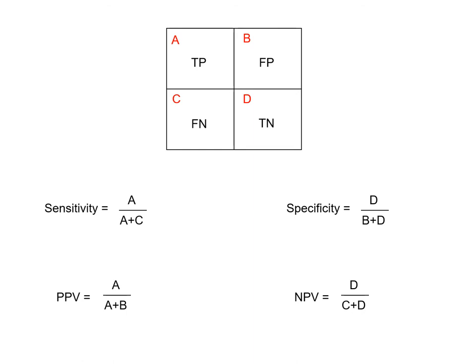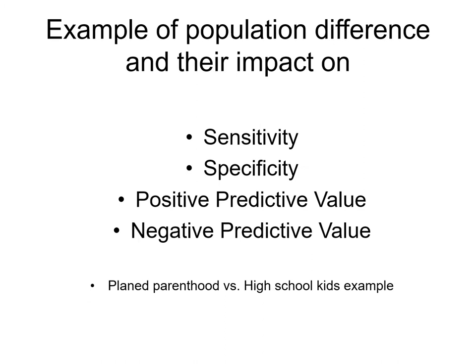Specificity is the number of true negatives divided by the number of true negatives plus false positives. The positive predictive value is the number of true positives divided by the number of true positives plus the number of false positives. The negative predictive value is the number of true negatives divided by the number of true negatives plus the number of false negatives.